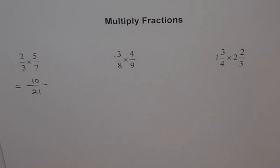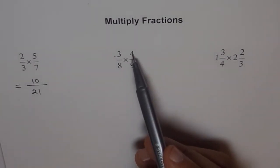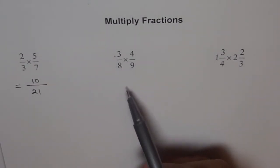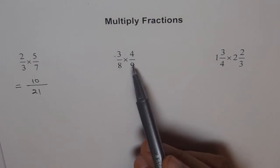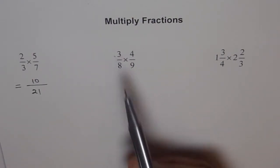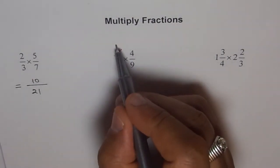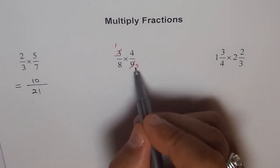Now in the next one, we see it is 3 over 8 times 4 over 9. Now here, 3 and 9, they have common factors. Both can be divided by 3. So let's do it. So 3 times 1 is 3 and 3 times 3 is 9.